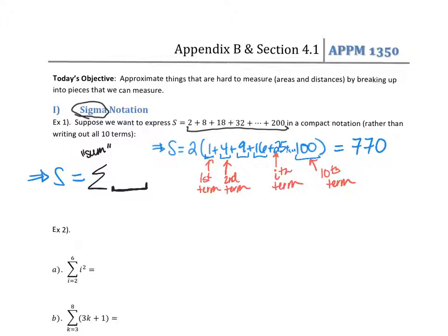Each term has a 2. And notice the first term is 1 squared, the second is 2 squared, so the i-th term is i squared. I put i squared inside the sigma. Below tells you where i starts — the first term is when i is 1 — and the top tells you where it ends: i is 10. That's what this notation means.